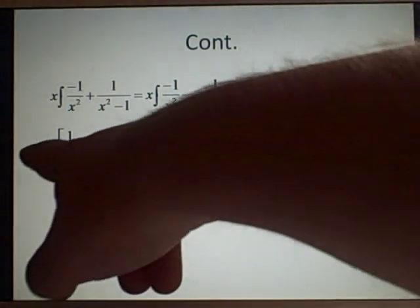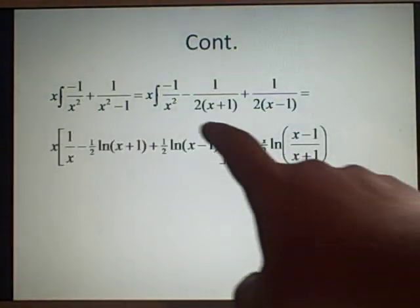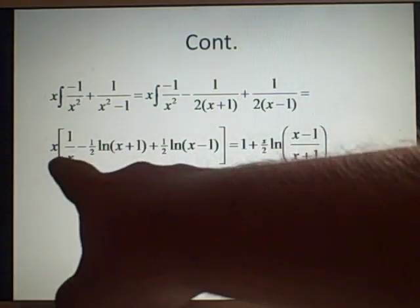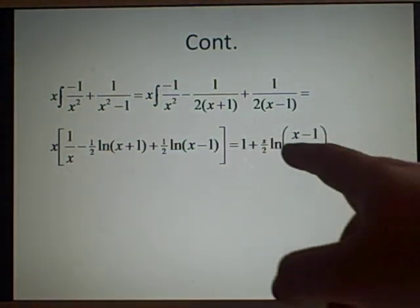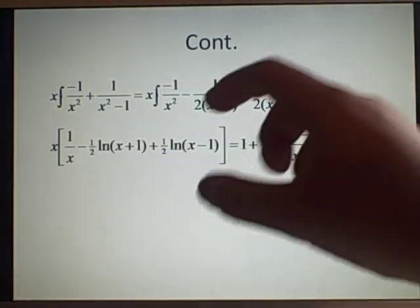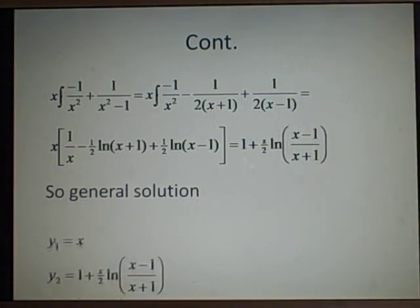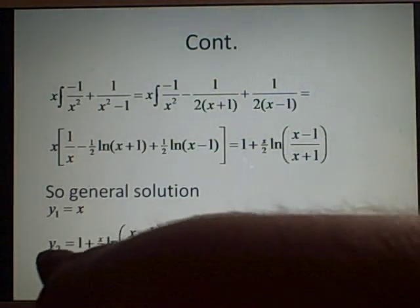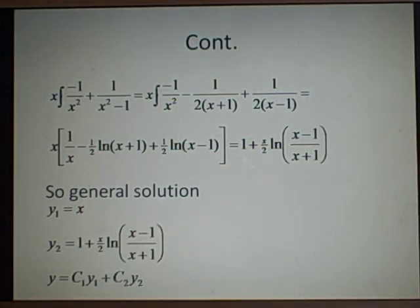So now we multiply everything by this x at the beginning, and we get 1 plus x over 2 log((x - 1)/(x + 1)), because if you subtract logs, you divide them inside. So the general solution, this is our y2. We've got our y1 is the x, our y2 is this, and it's given in the form y equals c1 y1 plus c2 y2.